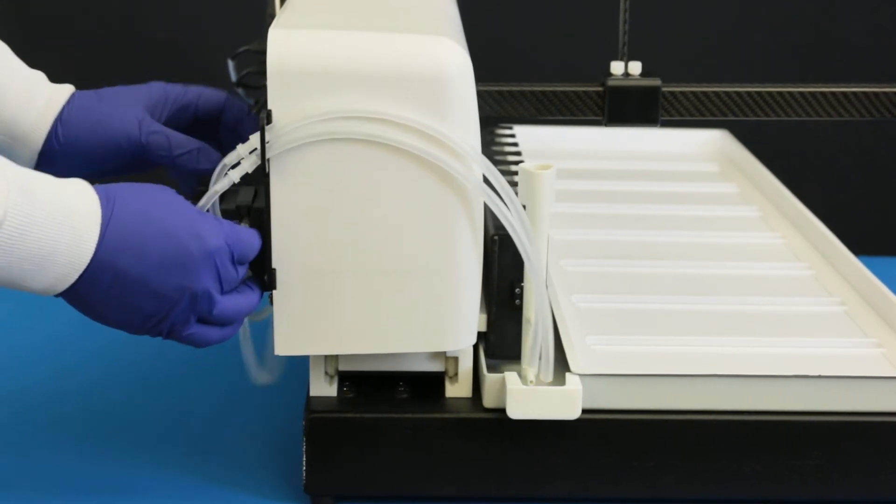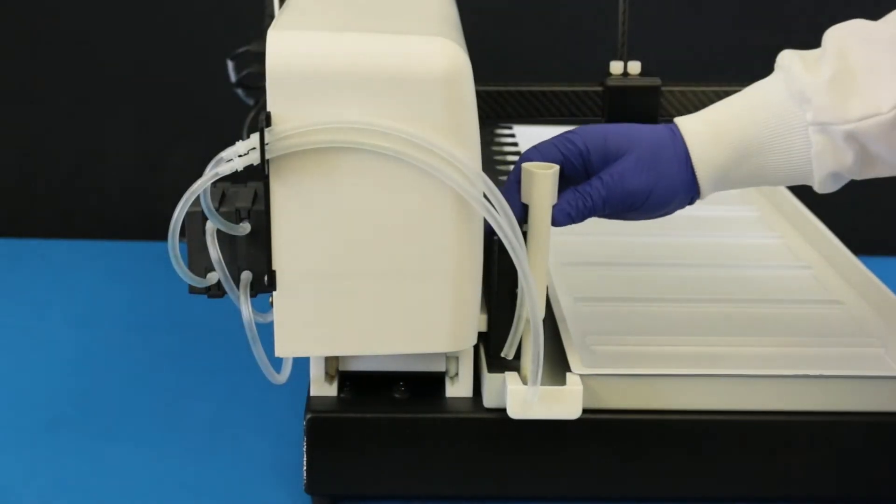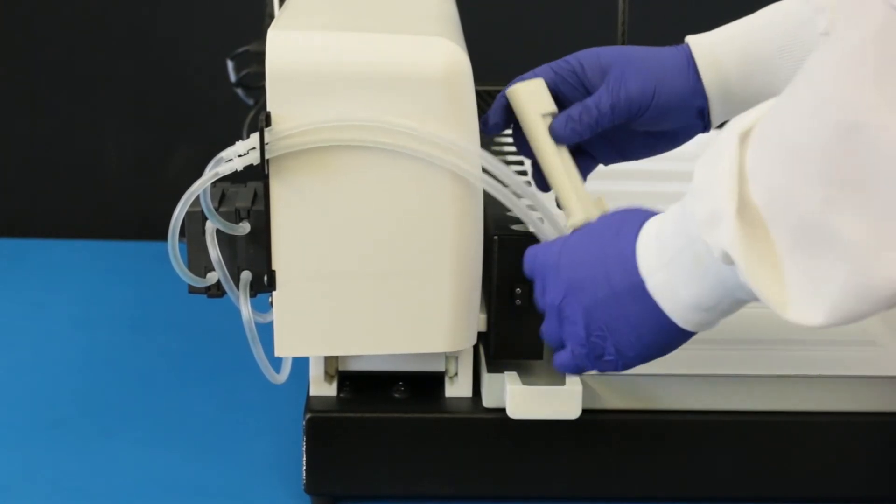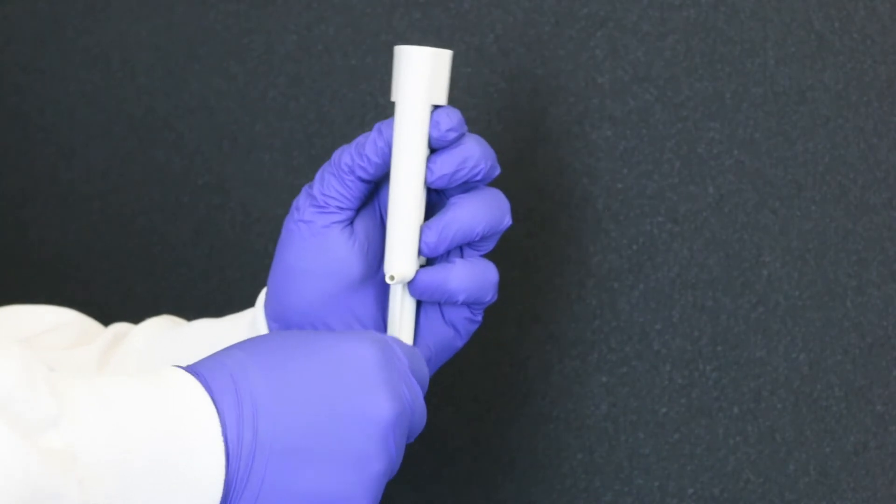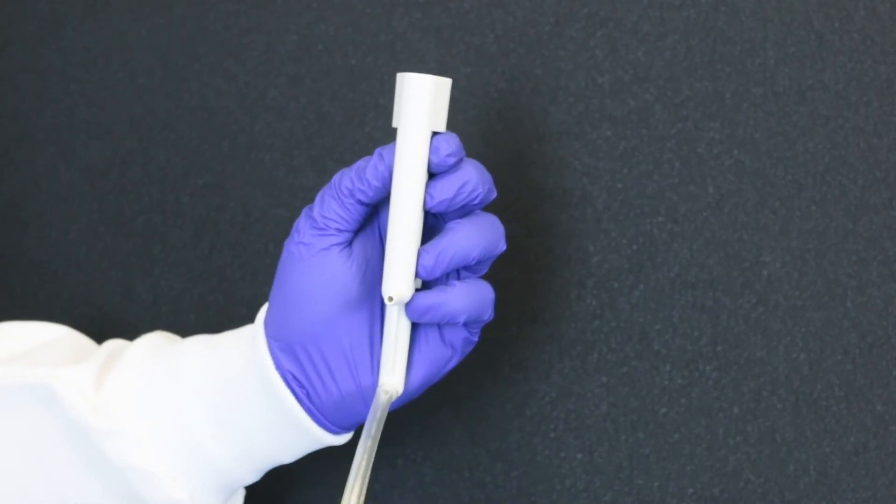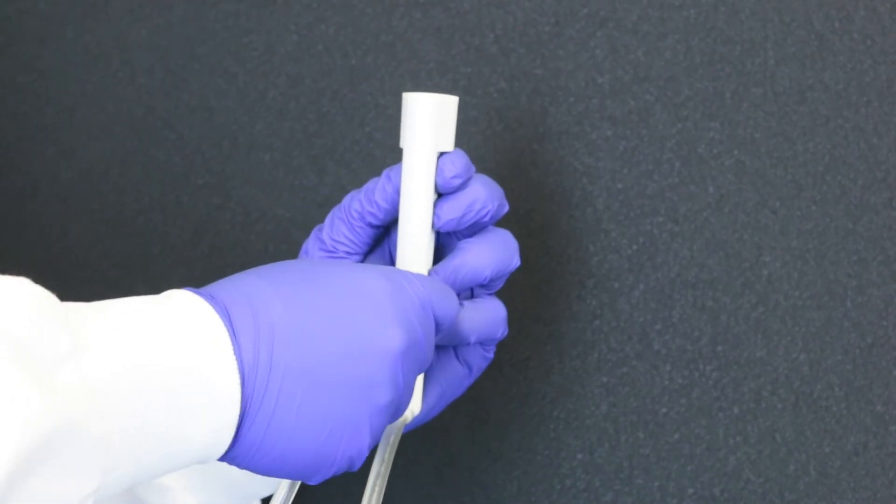Connect the smaller end of the second adapter tube to the top of pump channel 1. Connect the tube from the bottom of channel 2 to the bottom fitting of the rinse station. Connect the tubing from the top of channel 1 to the top fitting of the rinse station.